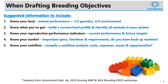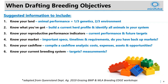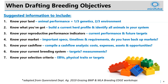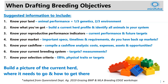Knowing your cash flow is important. You can compile a cash flow analysis extensively through an accountant, or start with a baseline model covering costs, expenses, assets, and opportunities. Understand your current breeding system — knowing the targets you've got and how you're measuring them will give you an idea of where you want to go. Know your selection criteria for bringing in new animals or genetics, looking at things like EBVs, physical traits, or certain production targets. Once you have all of this, you can build a picture of where your herd is and where it needs to go.